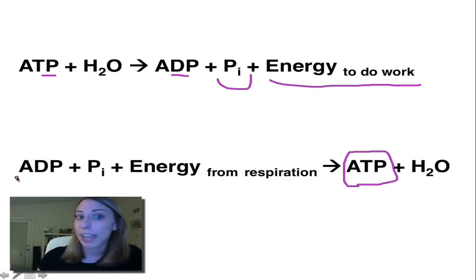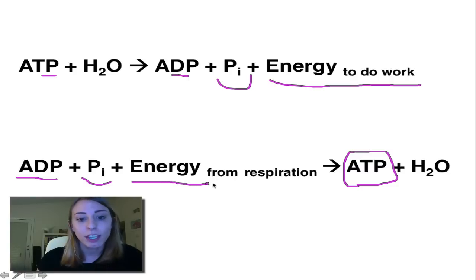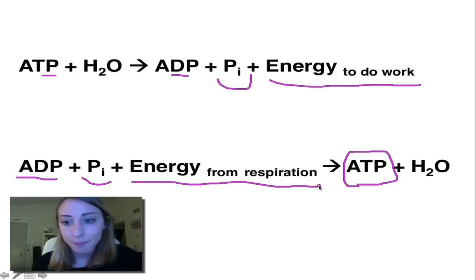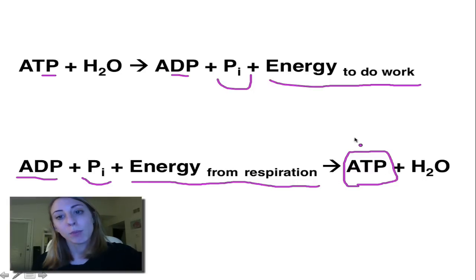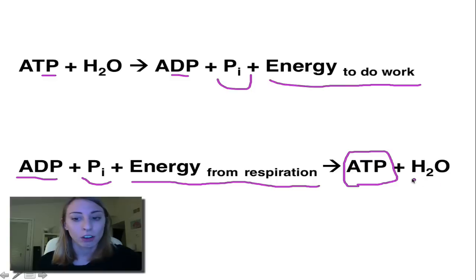We need to start with ADP and a free phosphate, just like the one we lost. And then, of course, we need energy from cellular respiration — from breaking down that food we love to consume. Then we're going to get our ATP back, which can be used to do more work. We also release some water because we had to add water to break the bond earlier.